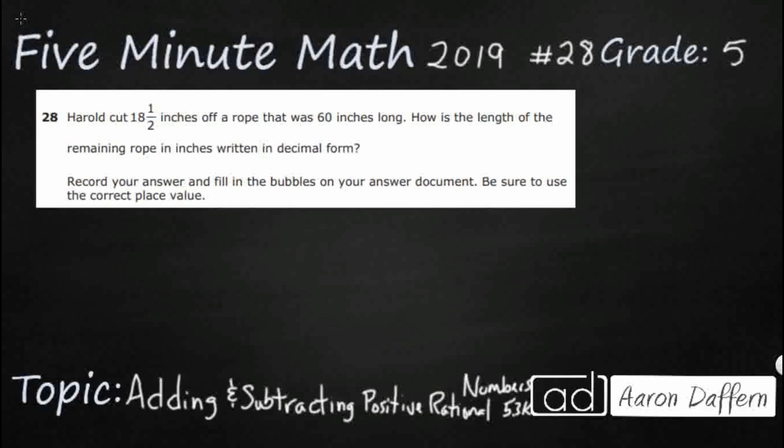So Harold is cutting off some rope. He's cutting off 18.5 inches from a rope that is 60 inches long and we need to find the remaining rope. That seems pretty simple, written in decimal form. That's going to be a little bit tricky there.